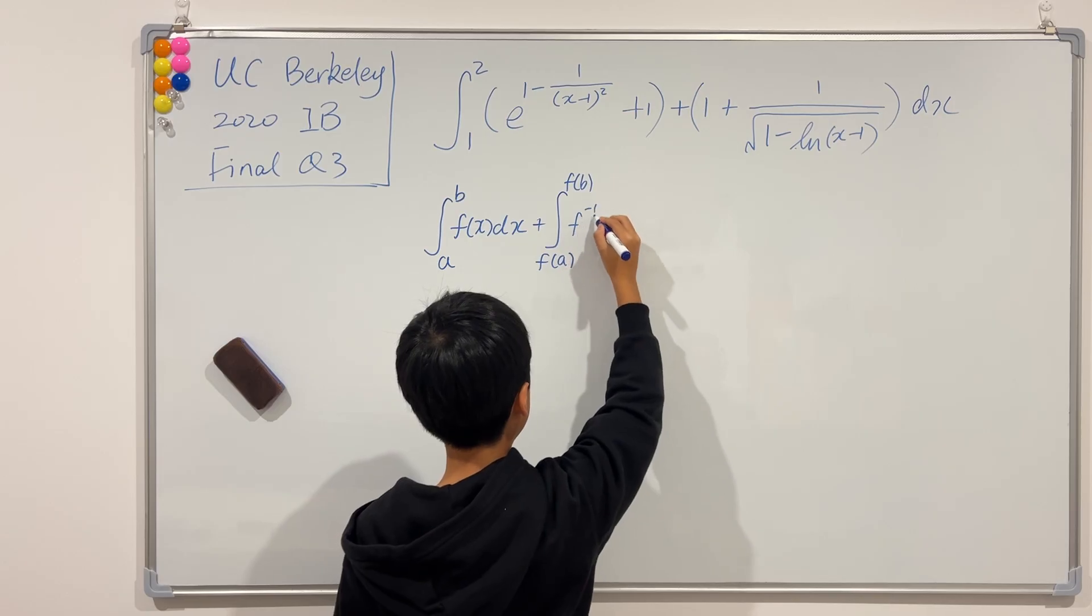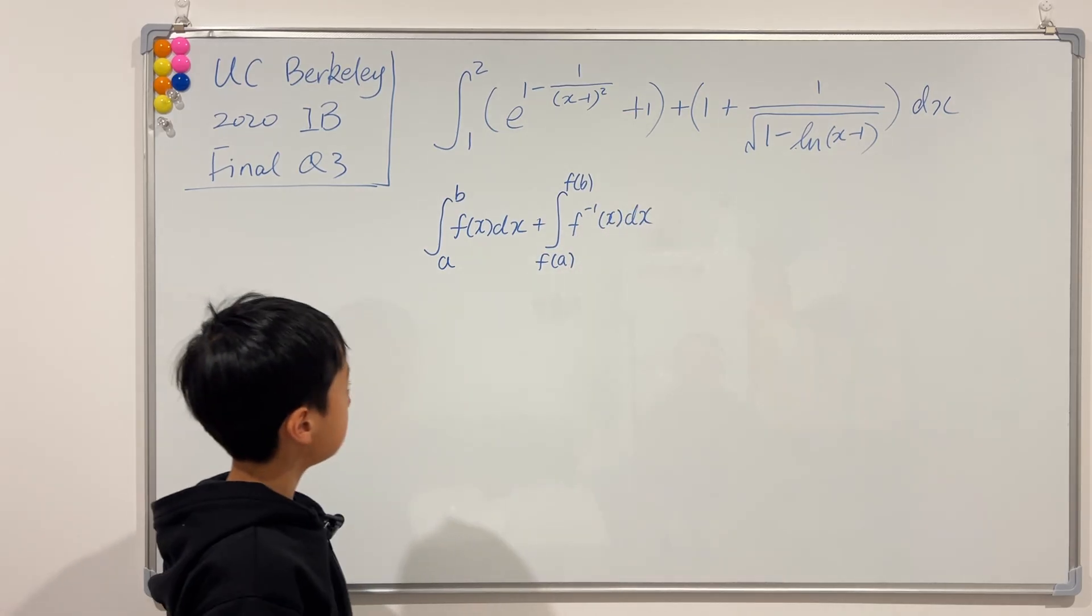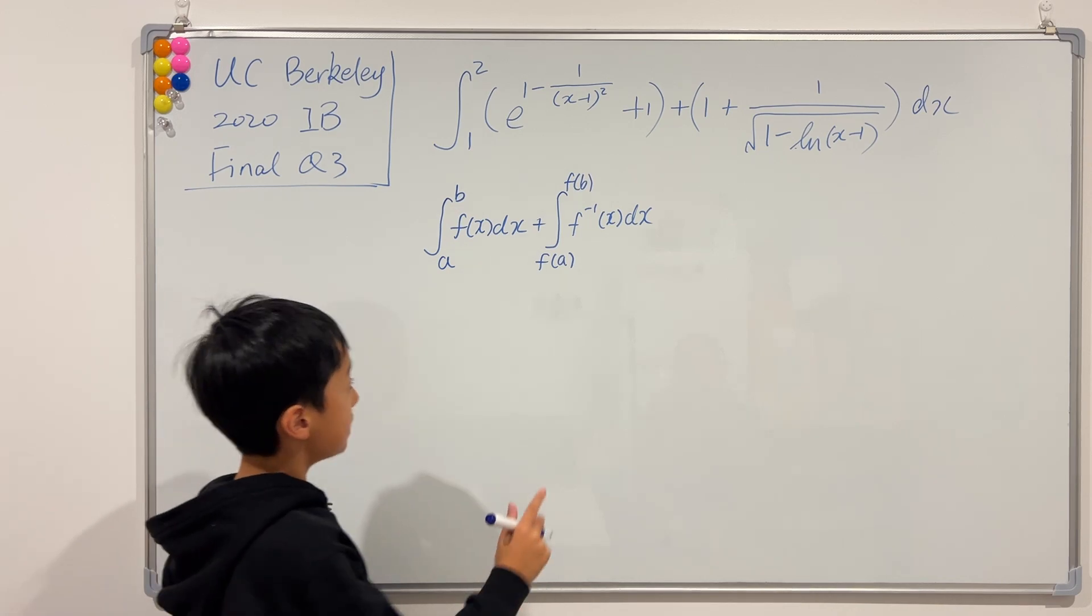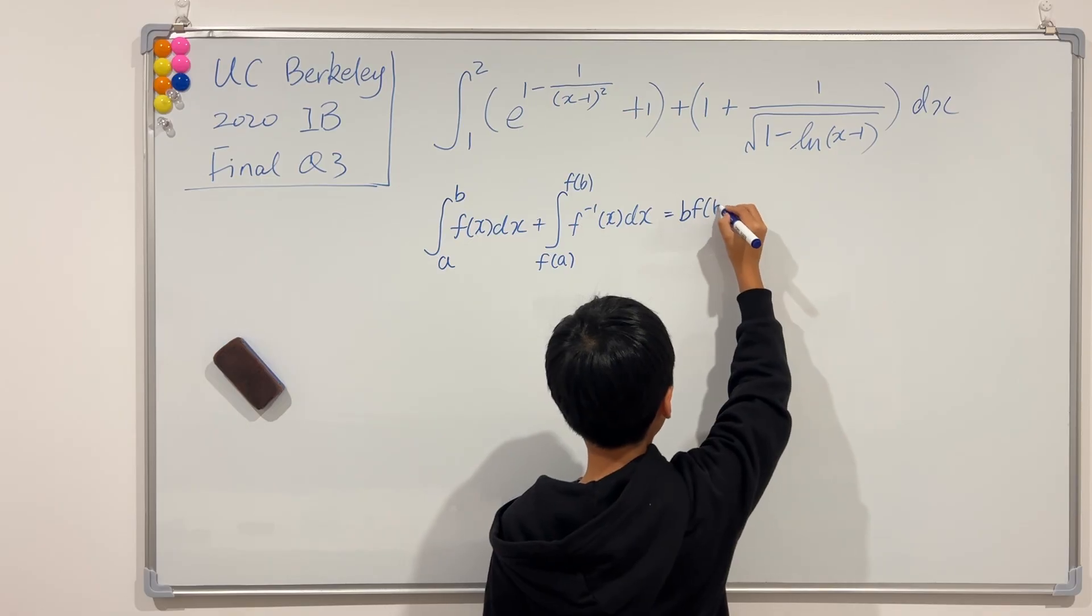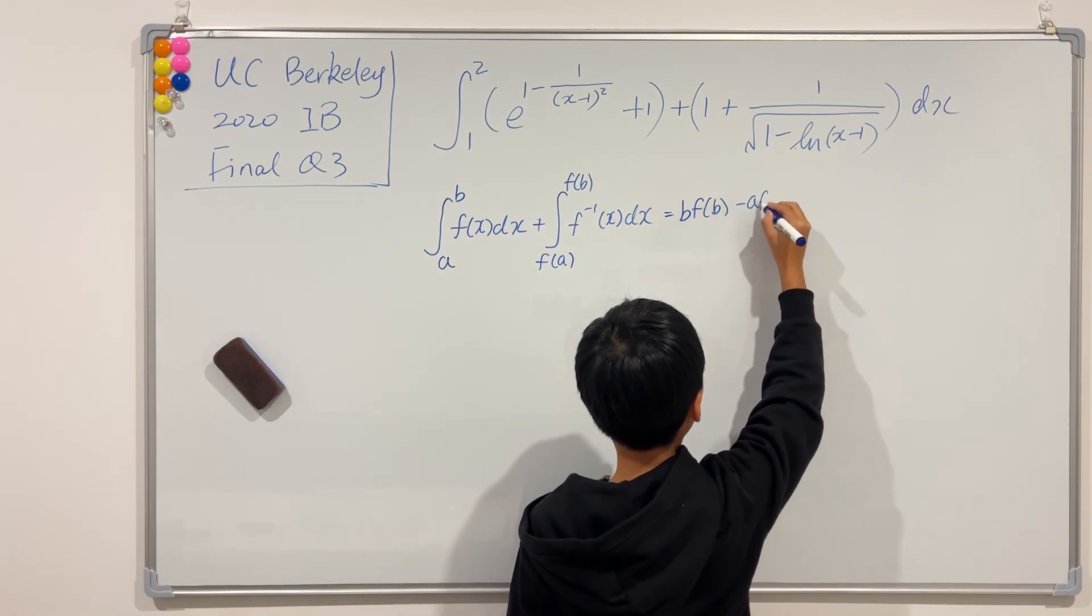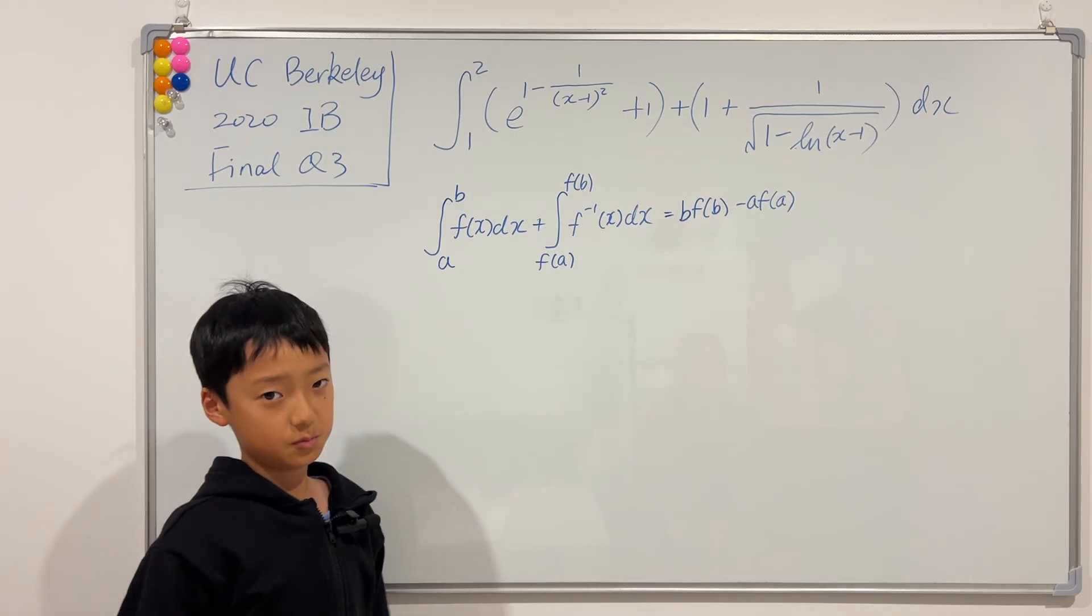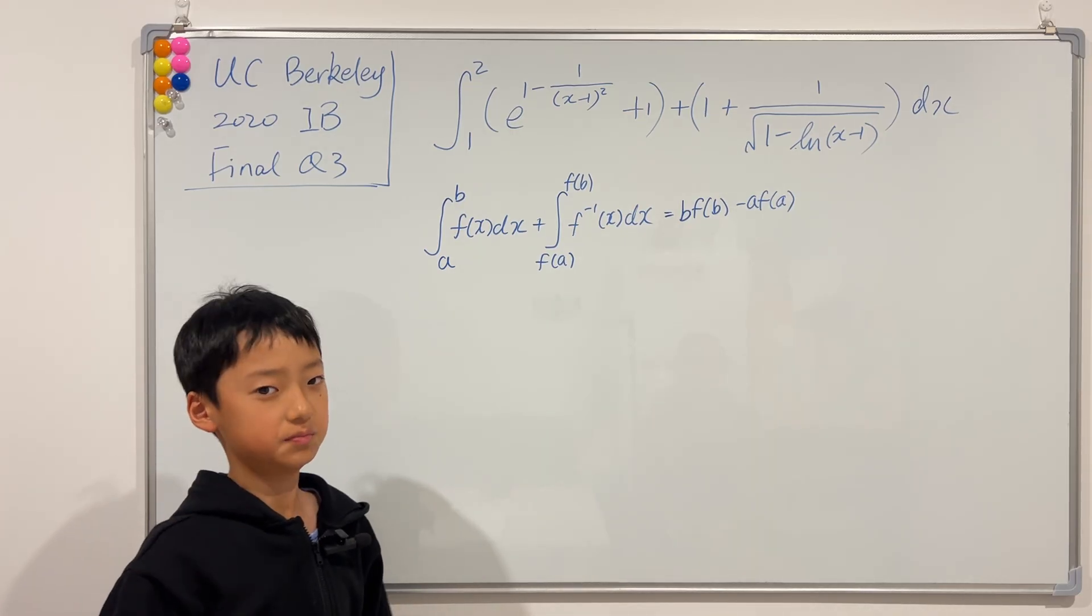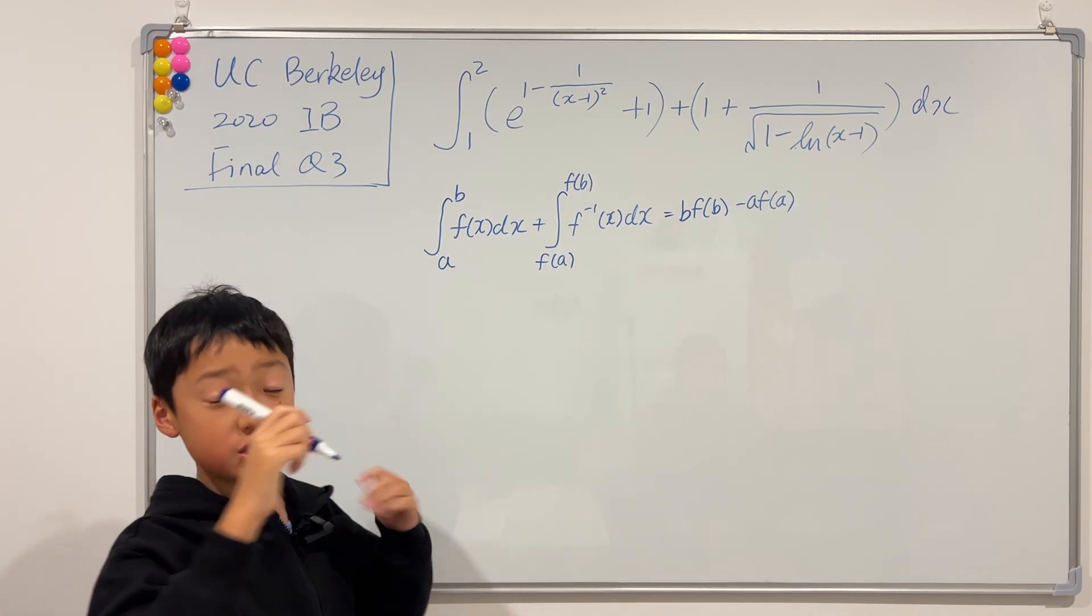Of f inverse of x dx, and this was actually equal to b times f(b) minus a times f(a). And again, for more information just check out that video. So before we use this formula, we still need to manipulate this original integral, so I'm going to work this out.